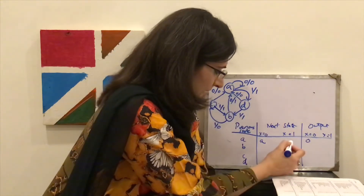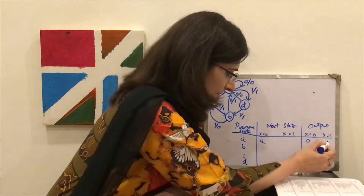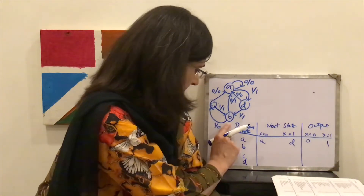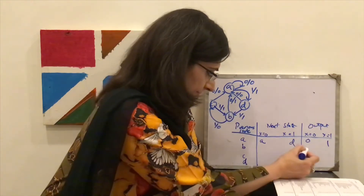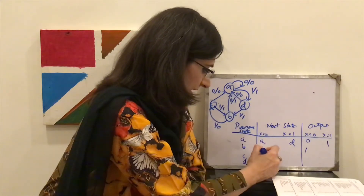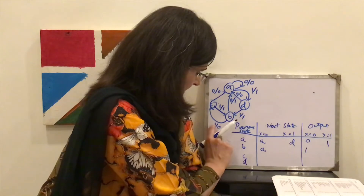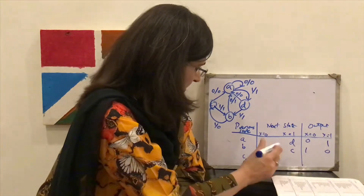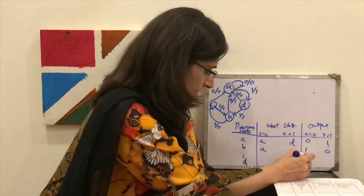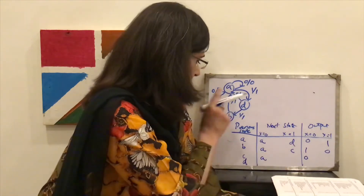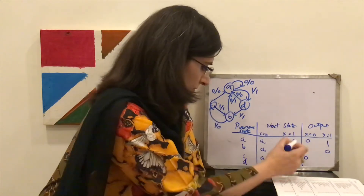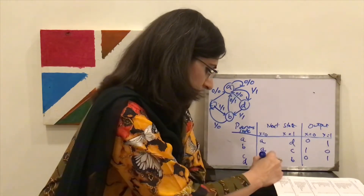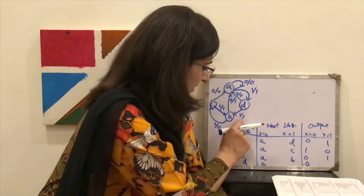For state B with input 1, you get output 1 and go to state B. For state C with input 0, the output is 0 and you land on state A. If input is 1, output is 1 and you go to state B. For state D with input 0, output is 0 and you end up at state A. And if input is 1, then you go to state B.